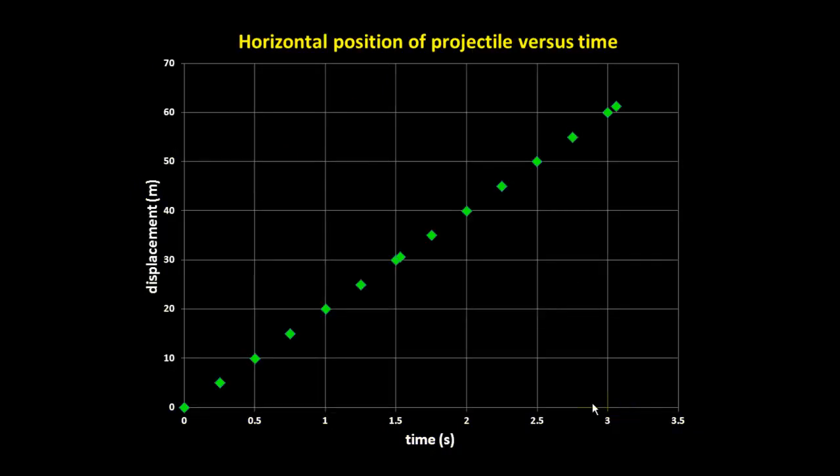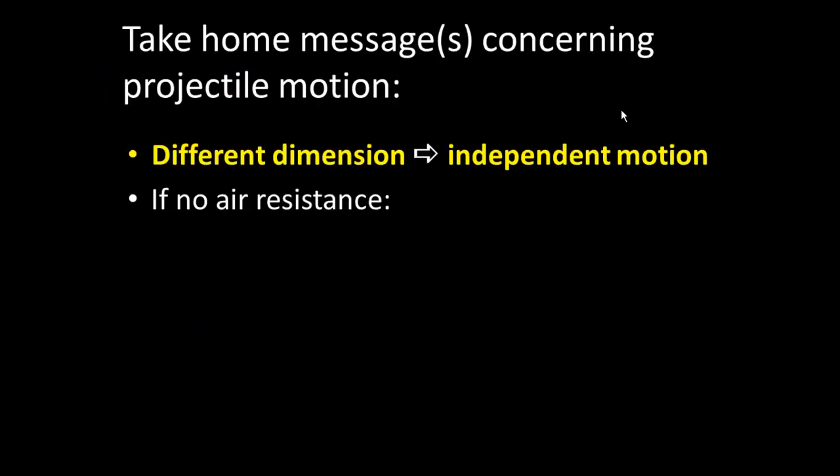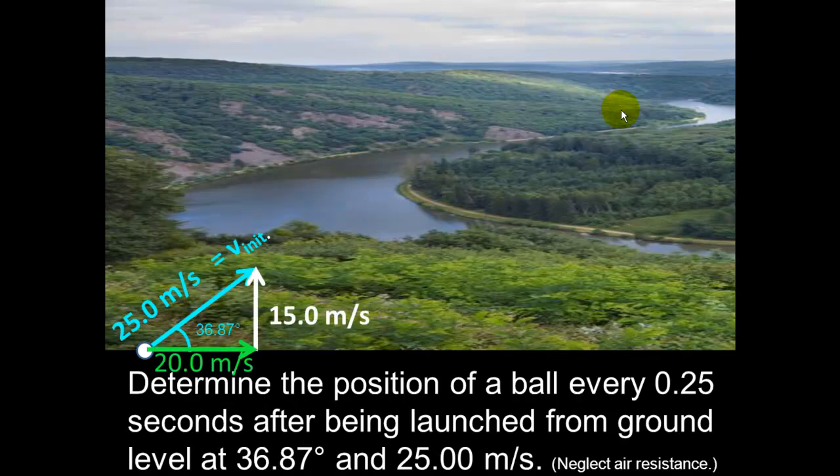And since its launch velocity in the horizontal was 20 meters per second, and since we get to neglect air resistance, there would be a constant velocity of 20 meters per second while the ball was in the air. As long as it was not touching the ground, it would still be going forward at 20 meters per second. We've got initial horizontal velocity of 20 meters per second, initial vertical velocity of 15 meters per second.